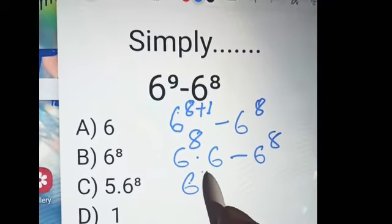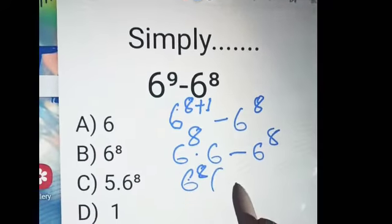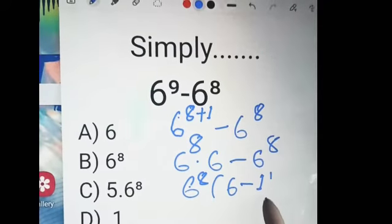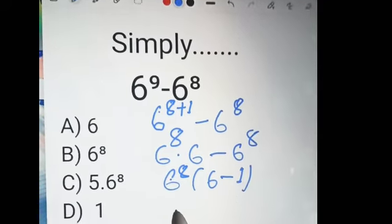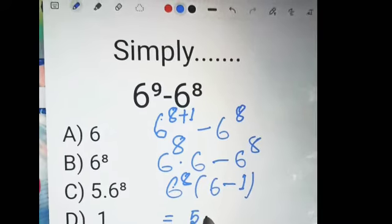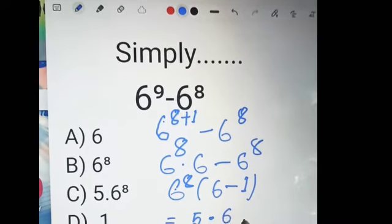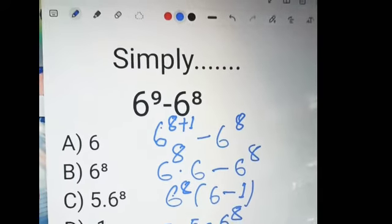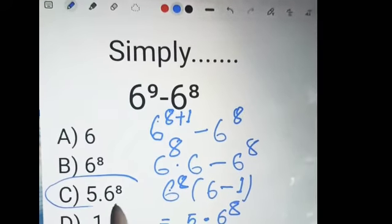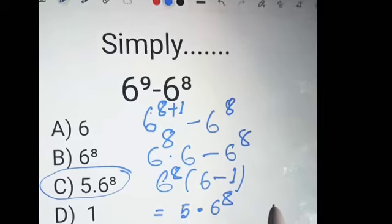Taking 6 to the power 8 as common, we get 6 to the power 8 into (6 minus 1), which equals 5 into 6 to the power 8. The answer is C.